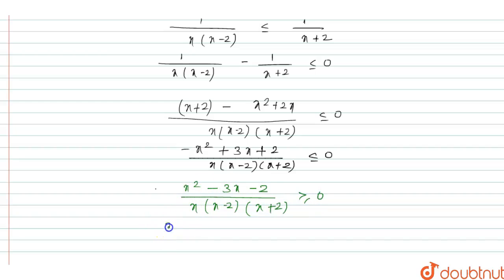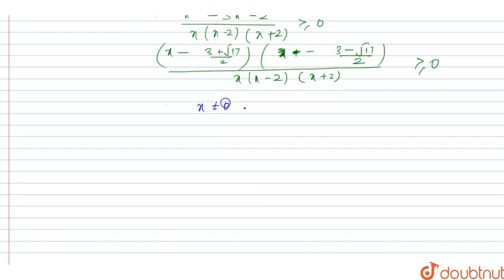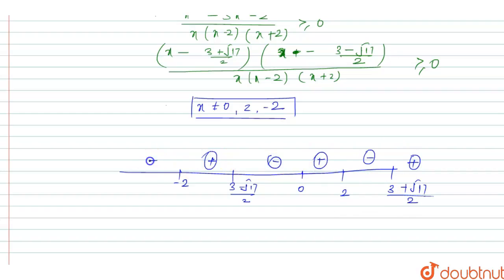The quadratic x² - 3x - 2 gives roots x = (3 + √17)/2 and x = (3 - √17)/2. The expression is not defined at x = 0, x = 2, and x = -2. Plotting on the number line: -2, (3-√17)/2, 0, 2, and (3+√17)/2.